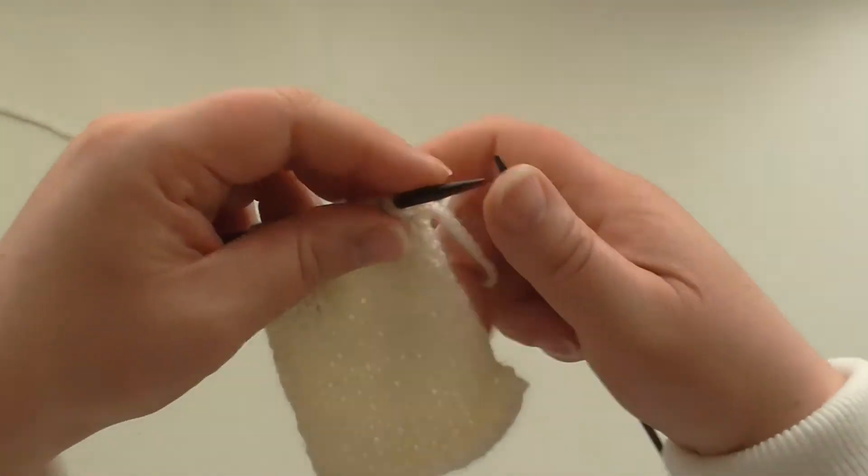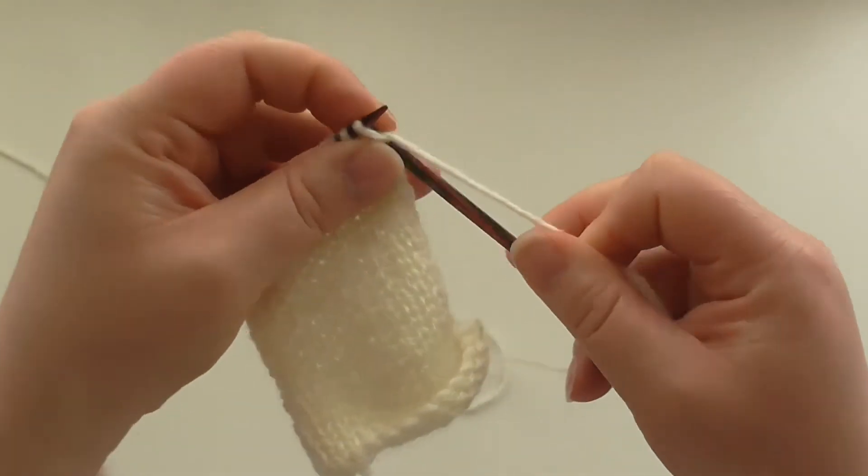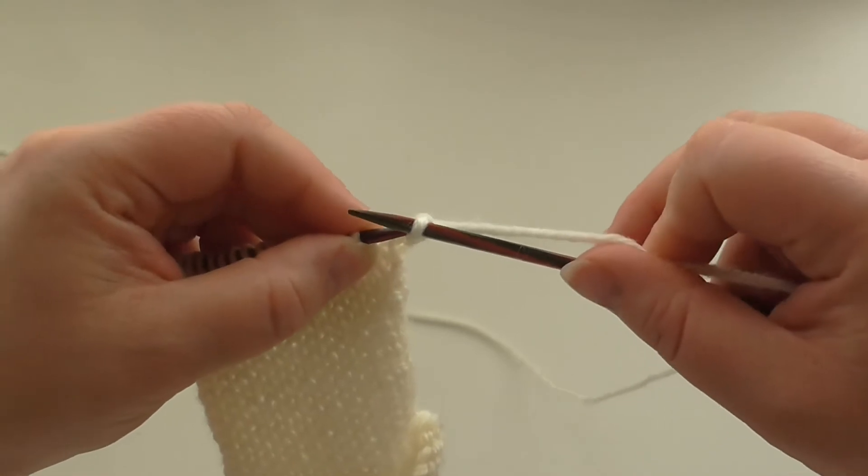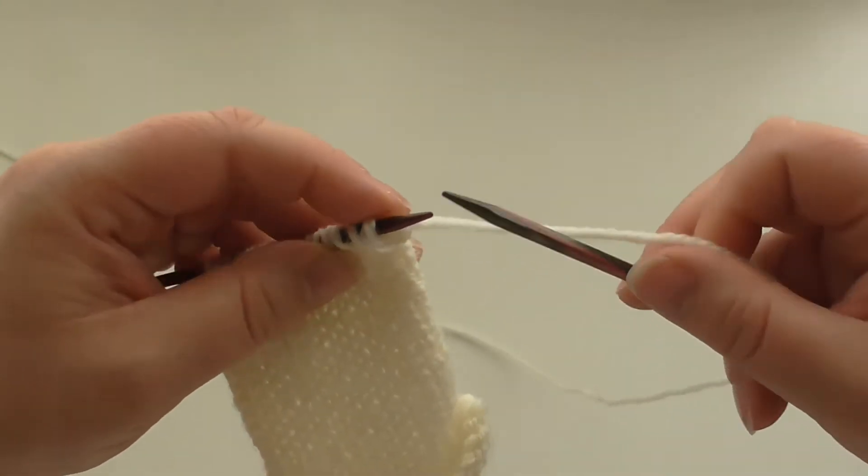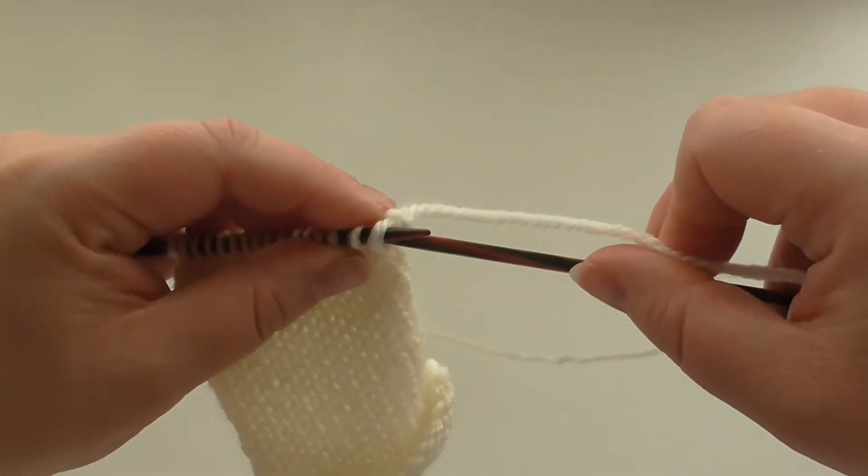We start by knitting the first stitch, and then we put the first stitch back onto the left needle without twisting it. Then we put the right-hand needle through the back of the two stitches like that and we knit them.